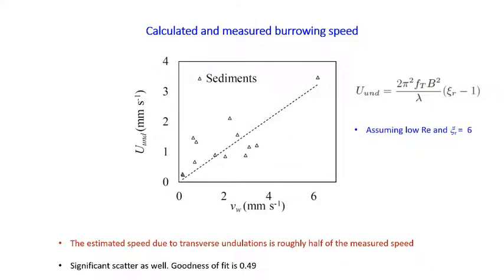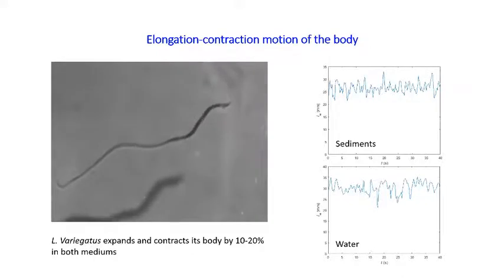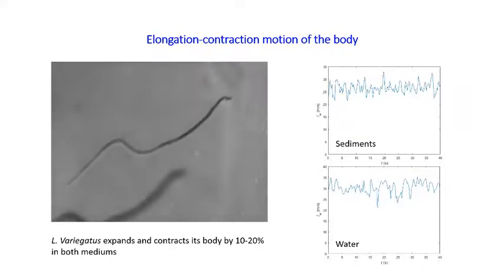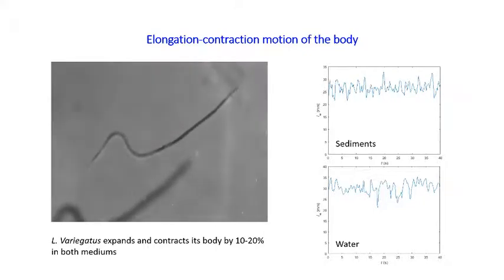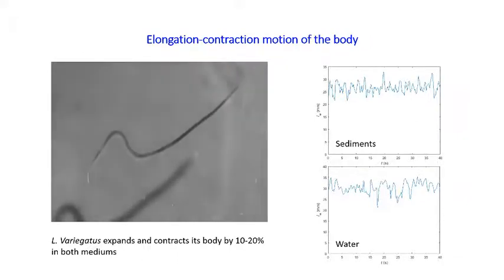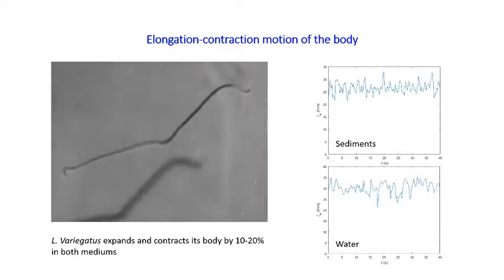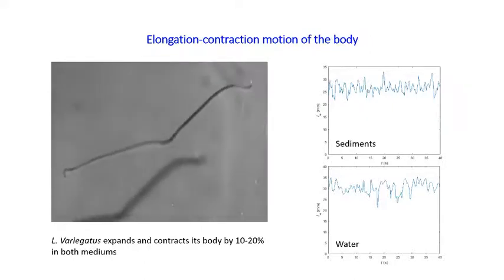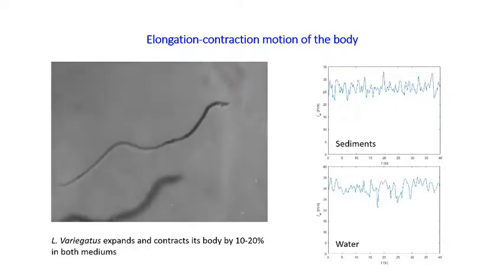To understand the missing 50%, I recall that these worms appear to elongate and contract as they move. Here's a short video of that: even in water you can see the worm elongate and contract. Tracking the worm shape, we can show the length of the worm changes from about 22 millimeters to about 30–35 millimeters — a variation of as much as 20% in sediments, and similarly in water.